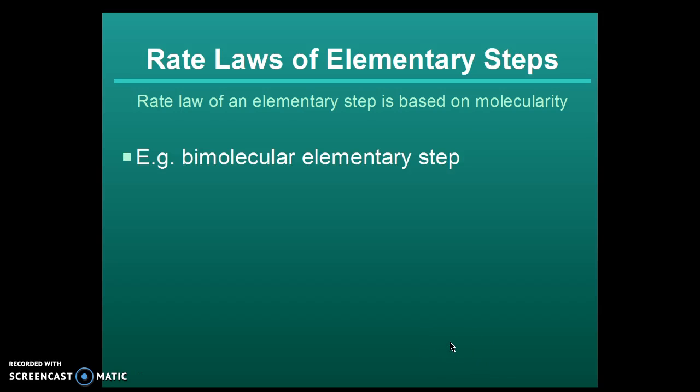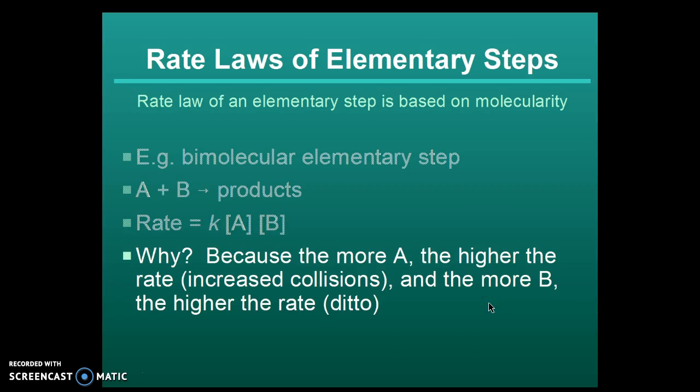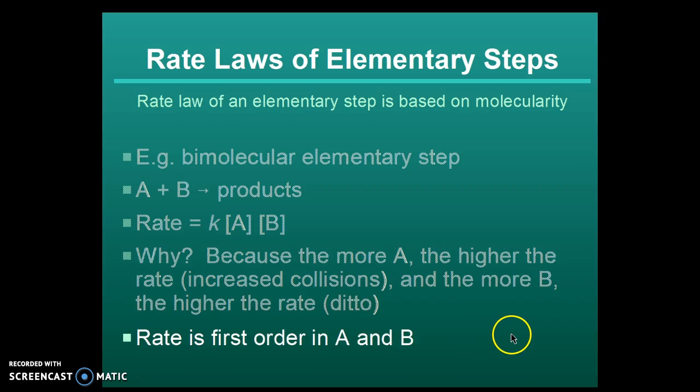In a bimolecular elementary step, you have two things reacting to form products. Therefore, the rate is equal to the rate constant times the concentration of both. Why? Because the more A, the higher the rate, and the more B, the higher the rate, because you're getting increased collisions. The rate then is first order in A and in B.